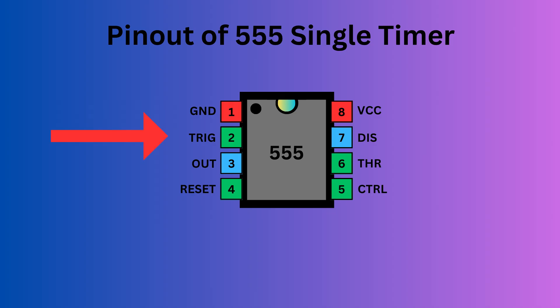Pin 2, the trigger pin, initiates the timing interval in monostable and astable modes. Pin 3 serves as the output, providing the timer's operational result depending on its mode: monostable, astable, or bistable.